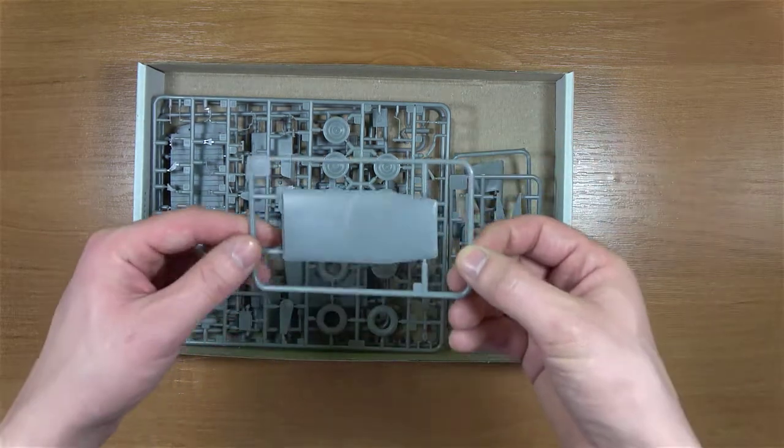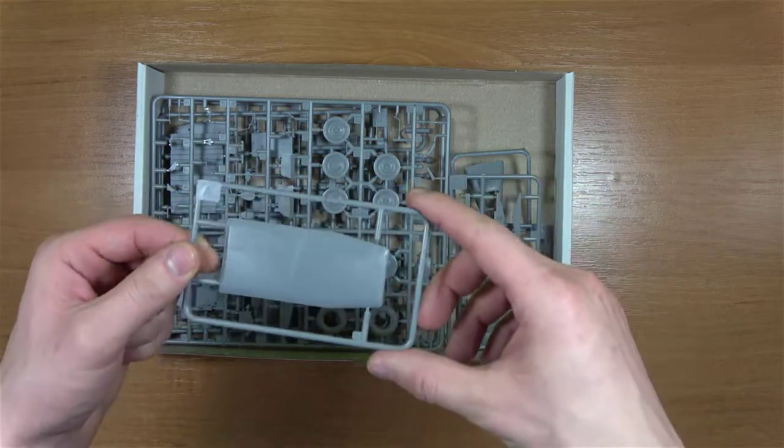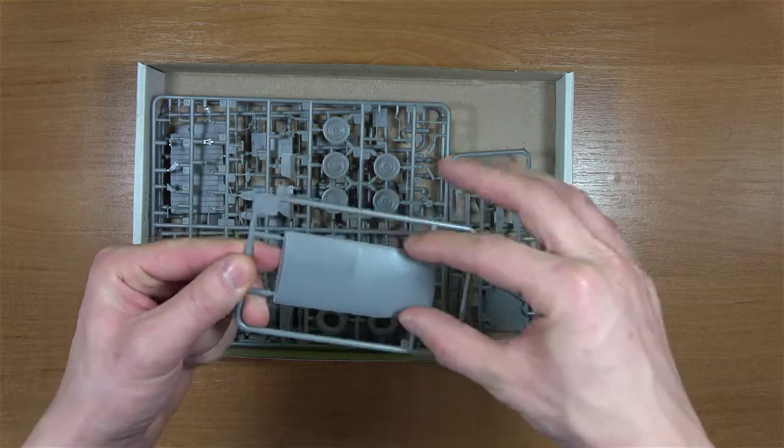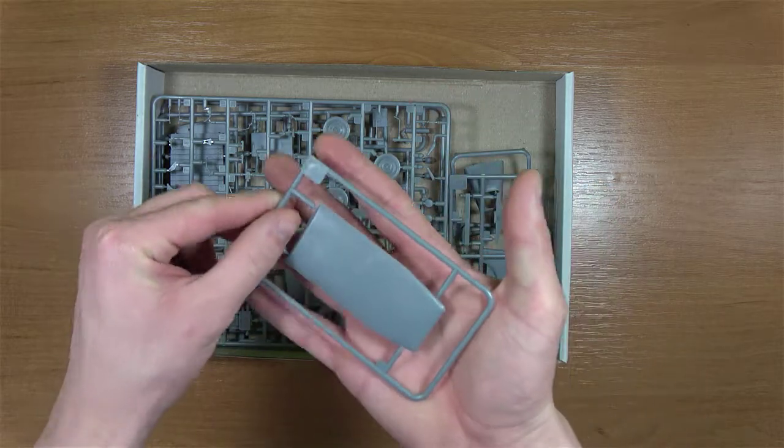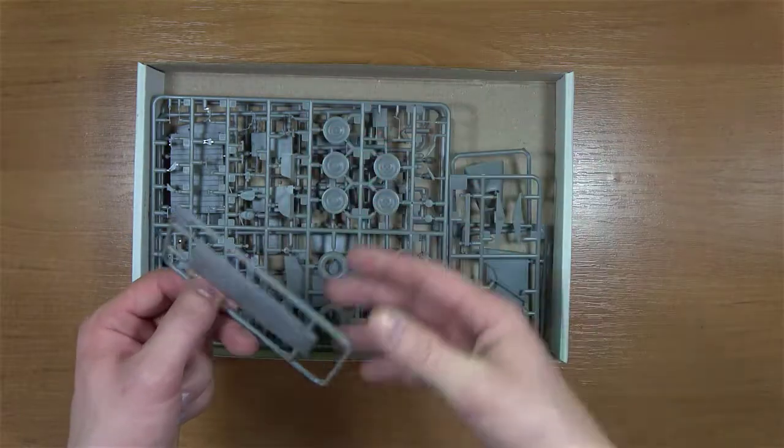Pierwszą ramkę jaką mamy to jest dół w zasadzie pojazdu, ponieważ to naprawdę mały. Można porównać sobie z moją dłonią. No mniej więcej standardową dłoń, jak większość ludzi.